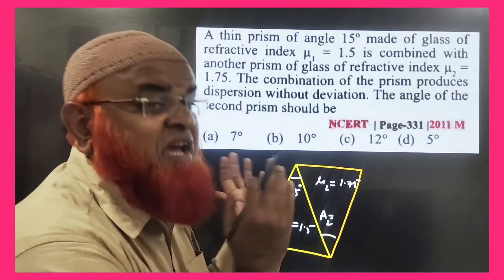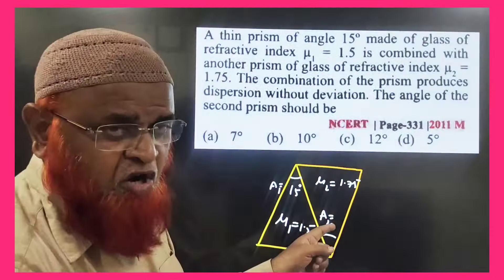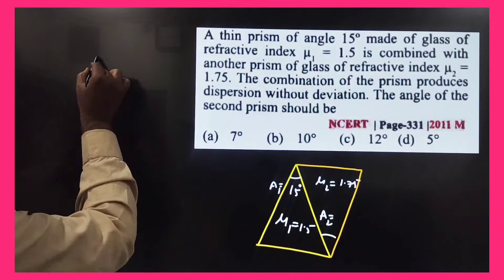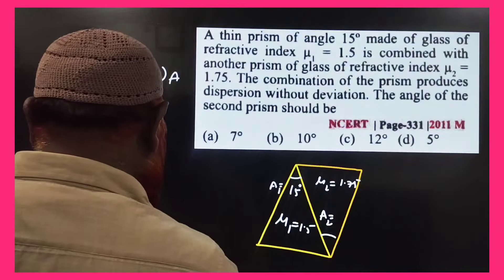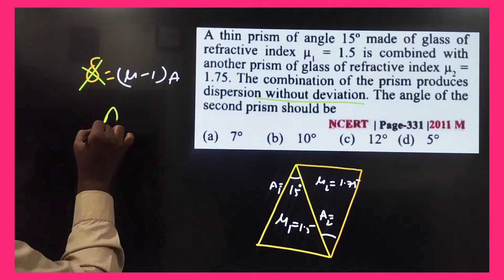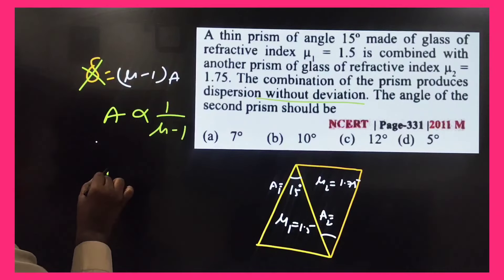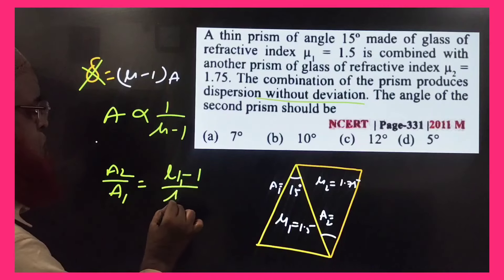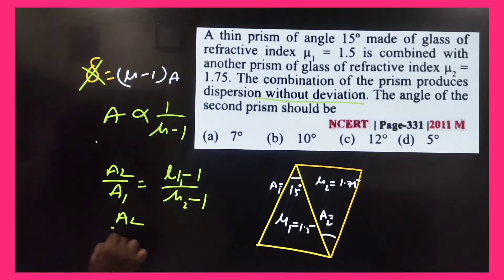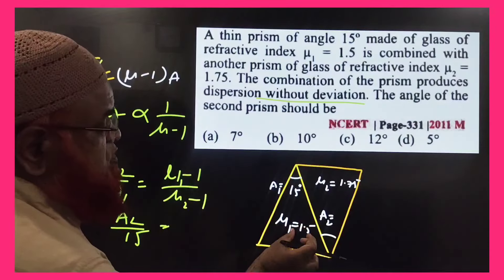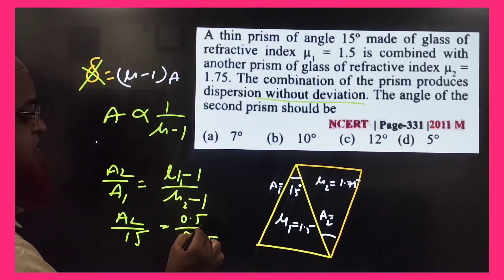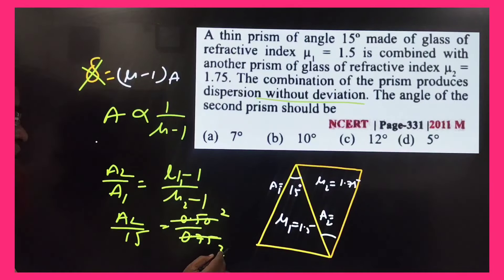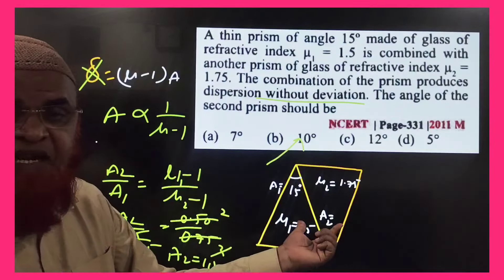When two thin prisms are joined with no net deviation, angle is inversely proportional to (mu − 1). So A2/A1 = (mu1 − 1)/(mu2 − 1). With A1 = 15°, mu1 = 1.5, mu2 = 1.75: A2 = 15 × 0.5/0.75 = 10 degrees.